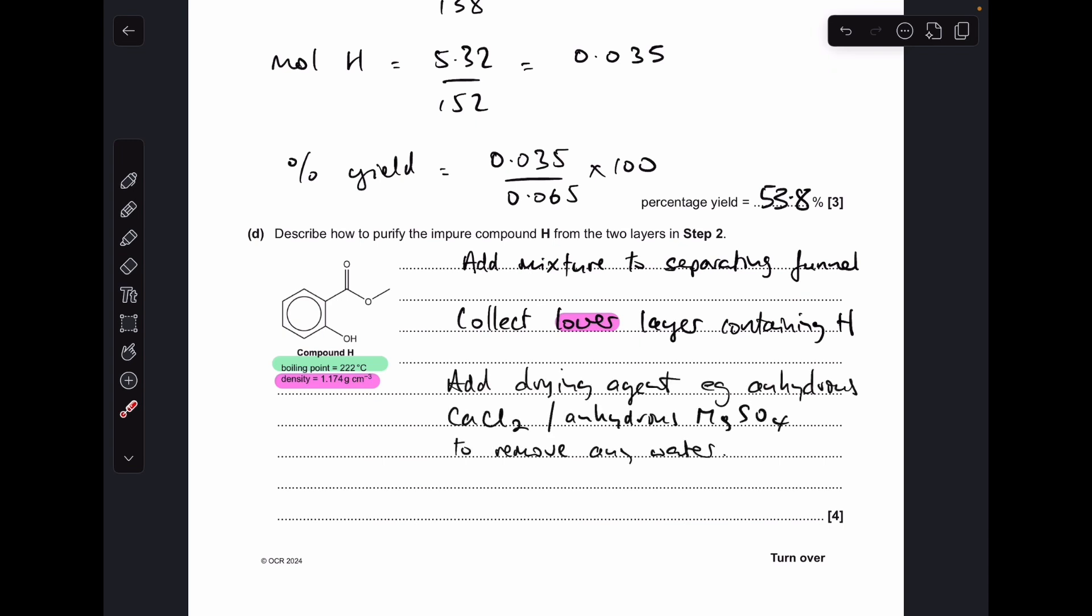Then we need to add a drying agent, for example anhydrous calcium chloride. You could have said anhydrous magnesium sulfate. The role of that is to remove any last remaining traces of water in the sample. Then the last thing you do is distill and collect the fraction that boils at the boiling point of compound H, at 222 degrees Celsius.